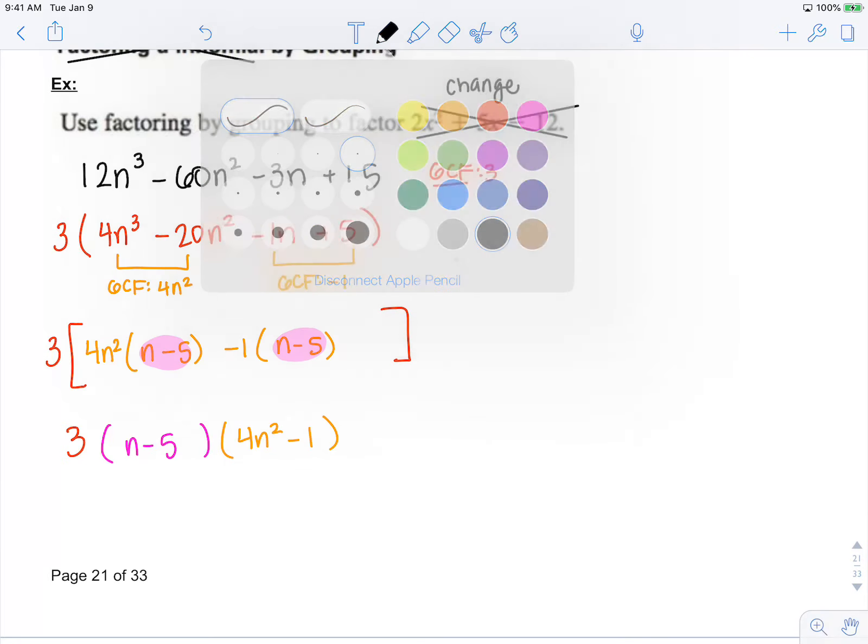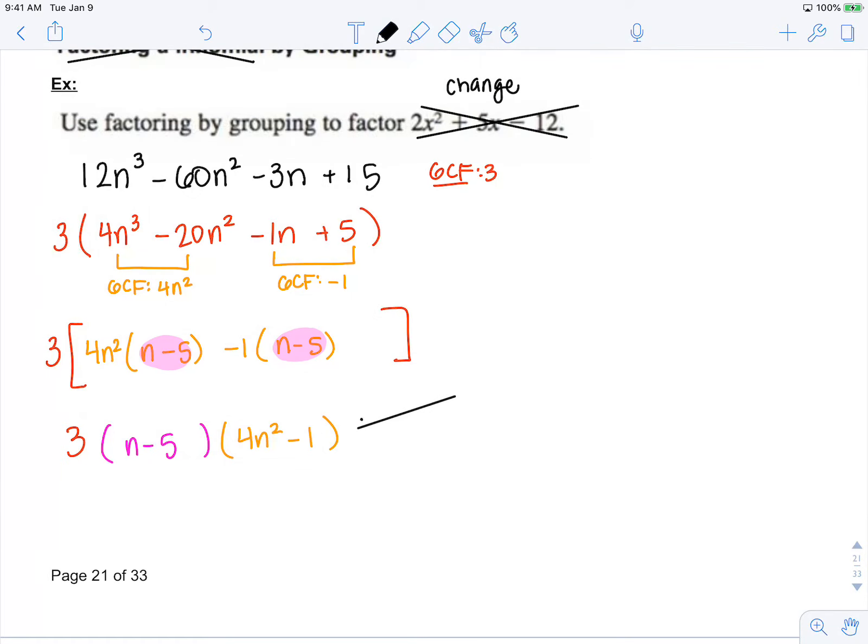Now, you might be tempted to stop. But this binomial right here is a difference of squares. It is u squared minus v squared, which factors to be u plus v, u minus v.